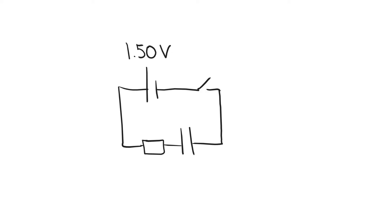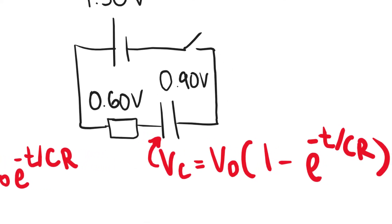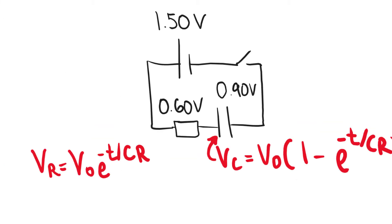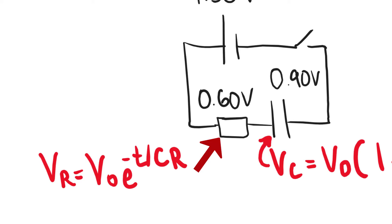When a capacitor is actually charging, the potential difference across the capacitor is equal to the EMF multiplied by 1 minus e to the minus t over CR. And the potential difference across the resistor is equal to V naught e to the minus t over CR.